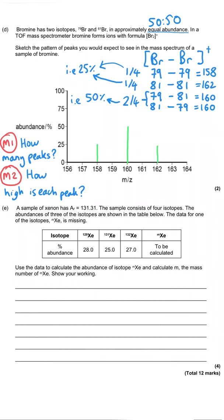So our final line needs to go up to 25% at the MZ value of 162. So for two marks here, we get one mark for the correct number of peaks, and we get one mark for the correct height of each of those peaks. So in other words, they need to be in a 1 to 2 to 1 ratio.